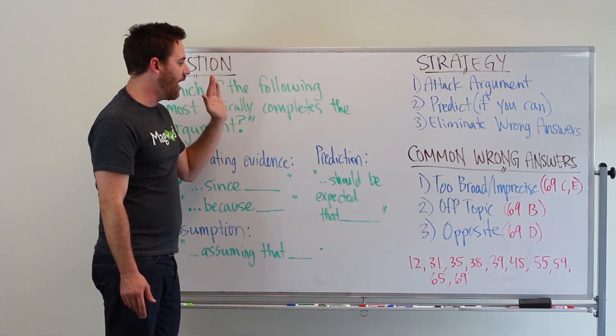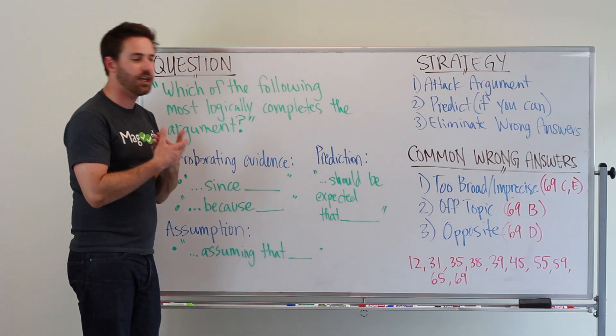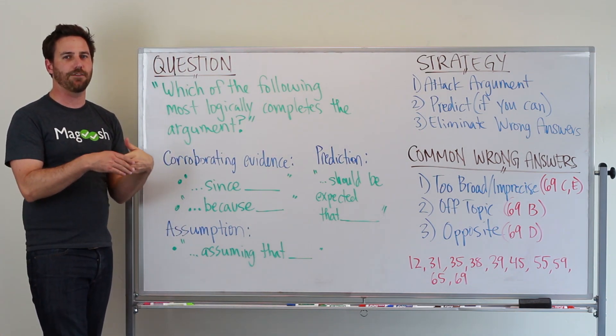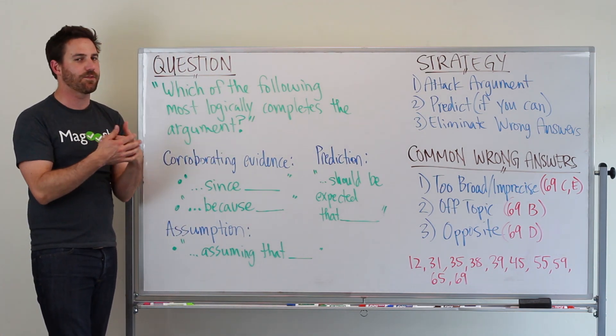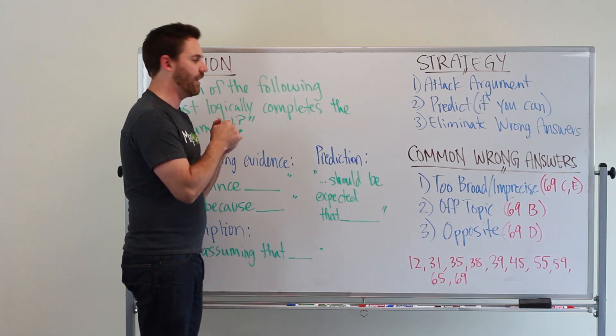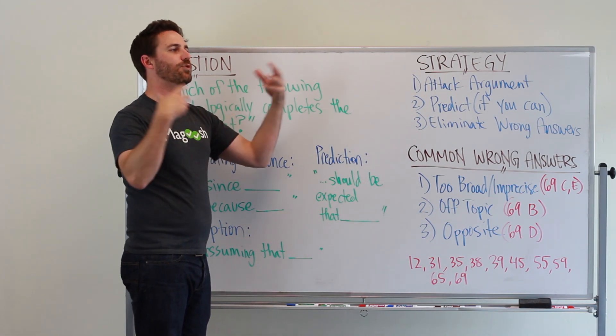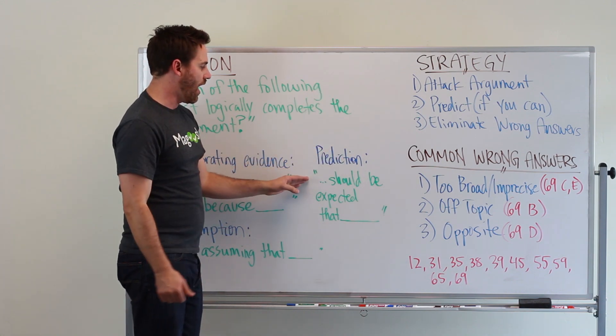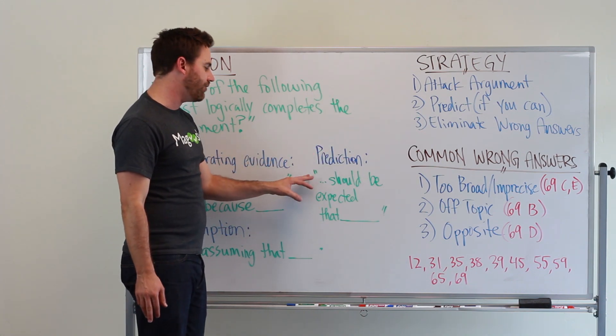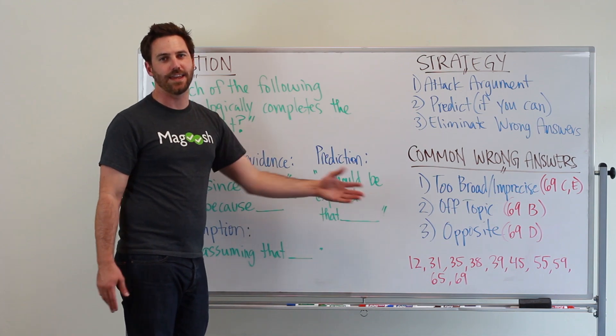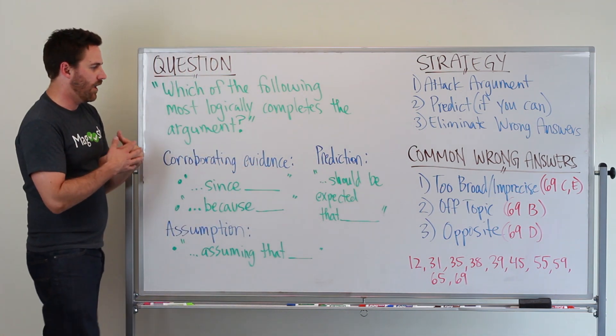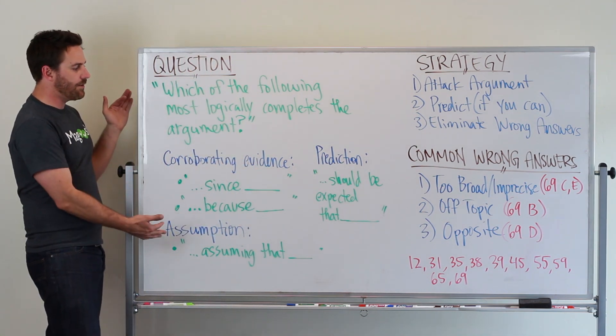And then the other type is a prediction, and so you're going to have to think about possible pieces of information that would result from the argument. These usually are in this form: should be expected that. So there's three different types.